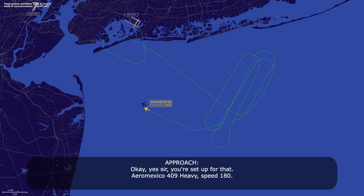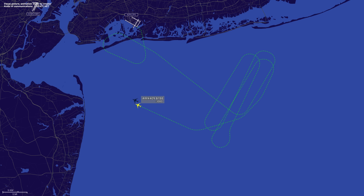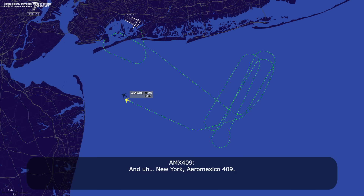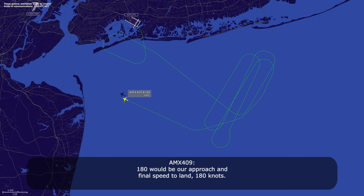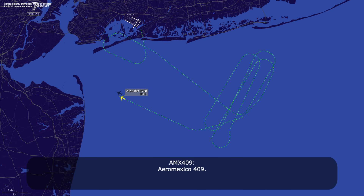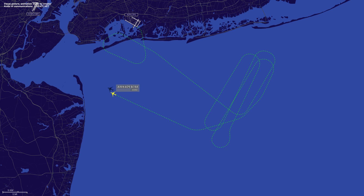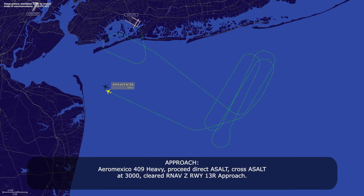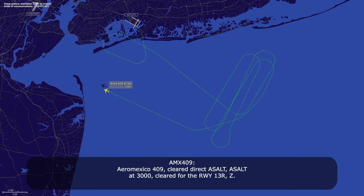Okay yes sir, you're set up for that. Aeromexico 409 heavy, speed 180. 180 would be our approach and final speed to land. Aeromexico 409 heavy, speed is your discretion, whatever you need to do. Aeromexico 409 heavy, proceed direct ASALT, cross ASALT at 3000, cleared RNAV Zulu, runway 13 right approach. RNAV Zulu 13 right approach, Aeromexico 409, cleared direct ASALT, cross ASALT at 3000, cleared runway 13 right Zulu.